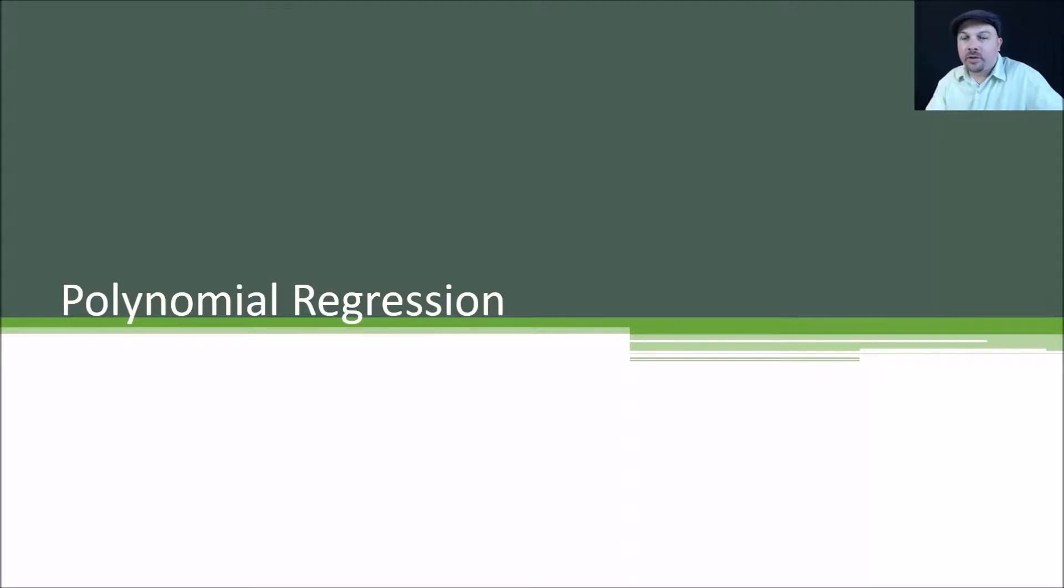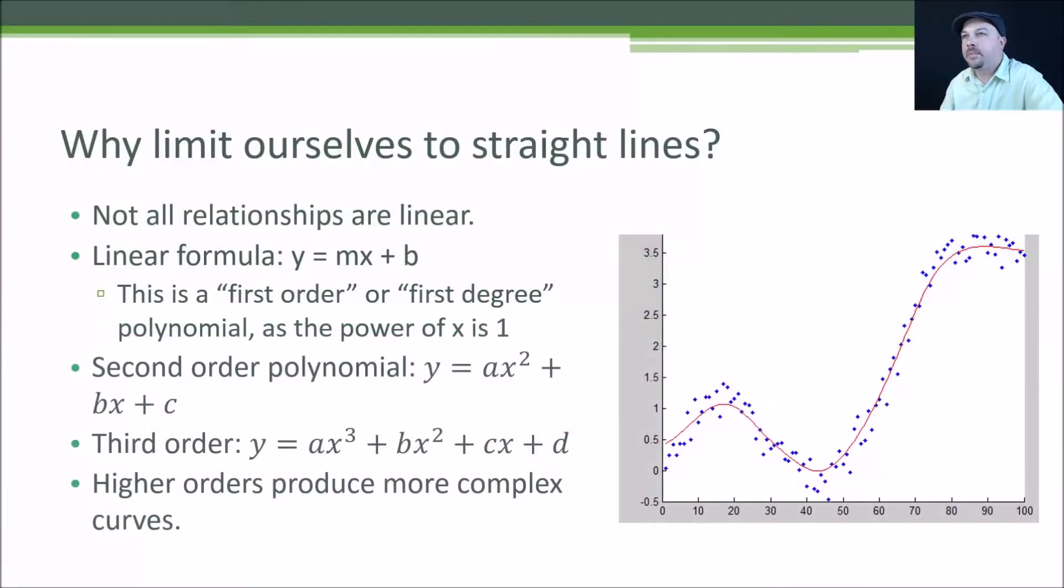All right, we talked about linear regression earlier where we fit a straight line to a set of observations. Let's talk about polynomial regression, which is a more general case of regression. So why limit yourself to a straight line? Maybe your data doesn't actually have a linear relationship. Maybe there's some sort of a curve to it. That happens pretty frequently.